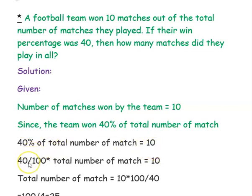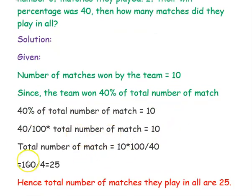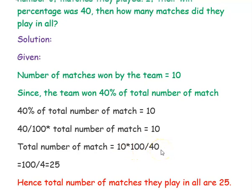40 percentage can be written as 40 divided by 100, and percentage is 1 divided by 100. So 40 divided by 100, multiplied by total number of matches, equals 10. Now rearranging this equation: total number of matches equals 10, with 100 going to the numerator, giving into 100, and 40 going to the denominator, giving divided by 40. So 10 into 100 divided by 40 — the zeros cancel, leaving 100 divided by 4, that is 25. Hence the total number of matches they played is 25.